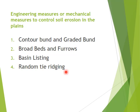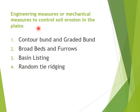There are four things we are going to see here: the first one is contour bund and graded bund, then broad beds and furrows, then basin listing, and random tie ridging. These mechanical methods are also called engineering methods. When I say engineering, some design will be there — for example, if you take a contour bund, we are going to design the bund in terms of length, width, and slope percentage. When you do such calculations, it becomes an engineering measure, also known as a mechanical measure to control soil erosion.